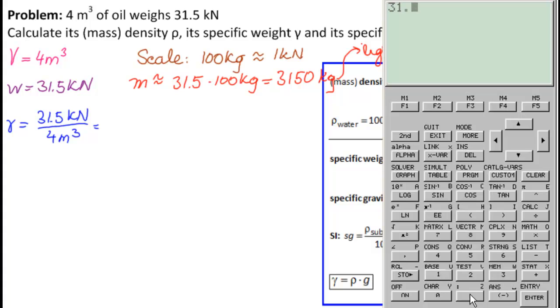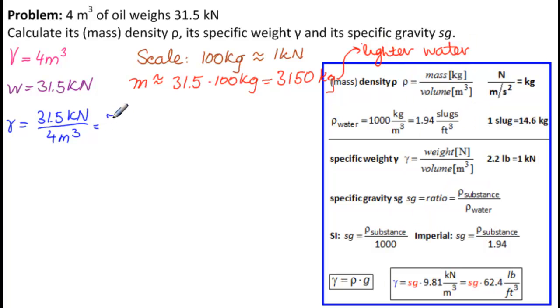We have 31.5, and we're going to write it in newtons. So, we have EE3 divided by 4 equals 7,875. 7,875 newtons per meter cubed. So, that's the answer to what is γ.